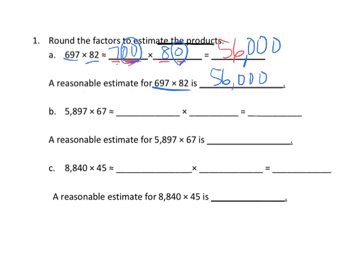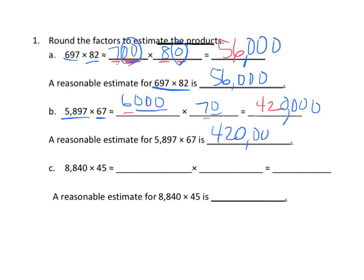Let's do another one. We've got 5,897 — that's about 6,000. 67 is about 70. So 6 times 7 gives us 42. This is really 6,000, so we have three zeros, and this is really 7 tens, so we have that extra zero. That gives us four extra zeros, and our answer is 420,000 — that is our reasonable estimate.